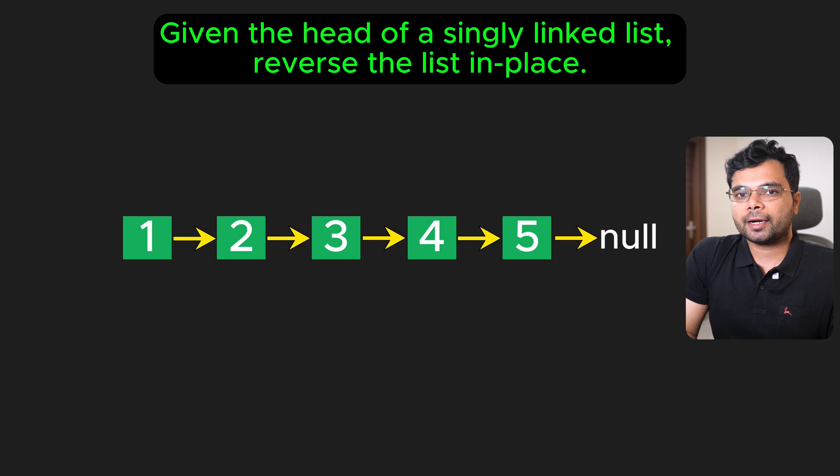we can reverse the list in O(n) time and O(1) space using three pointers: previous, current, and next. Start with the previous pointer as null since there is no previous node at the beginning. Current pointer points to the head of the list and the next pointer helps us temporarily store the next node in the list so we don't lose track while reversing. In each iteration,